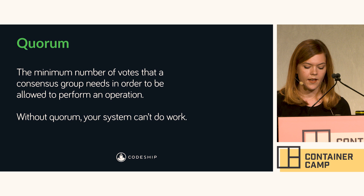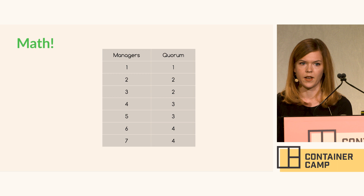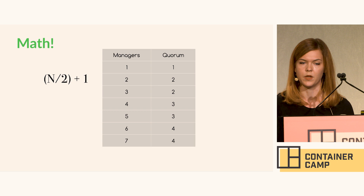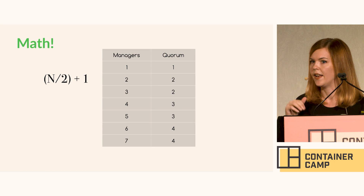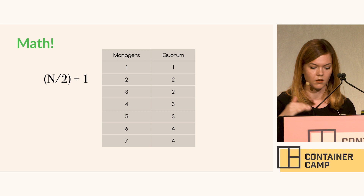This becomes particularly important if you're talking about large distributed clusters. If you have more than one manager, you want to make sure that you pick a manager group that will tolerate failure. We can solve this problem with math: quorum is really just n number of managers divided by two plus one. Fifty percent is not enough — it has to be just over 50%. That's the lower limitation for quorum.